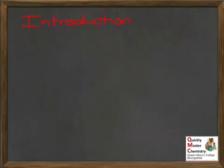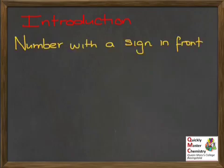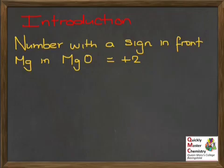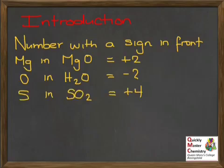So what is an oxidation state? Well, on a practical level, it's a number with a sign in front of it. For instance, if you were to ask what's the oxidation state of magnesium in the compound magnesium oxide, the answer would be plus 2. If you were to ask what's the oxidation state of oxygen in water, minus 2, and sulphur in sulphur dioxide, plus 4, and so on.